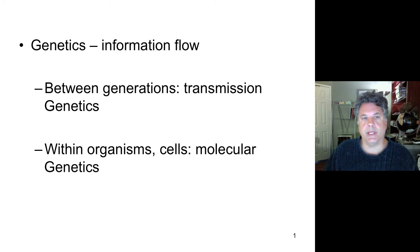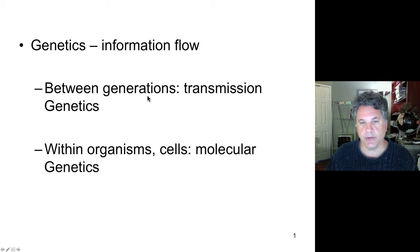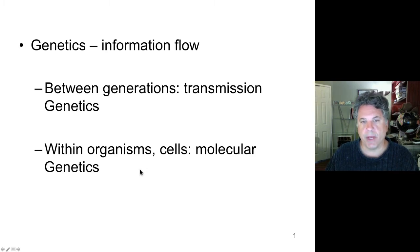Let's continue our treatment of genetics. Genetics is really the study of information flow within biological systems. When we talk about information flow between generations — either between cell generations or organismal generations — we're talking about transmission genetics, which is what we've been discussing for the past few weeks. Now it's time to move on to molecular genetics, which describes the flow of information within organisms or cells — that is, the encoding of information in DNA and the decoding of that information to govern cell function and structure.